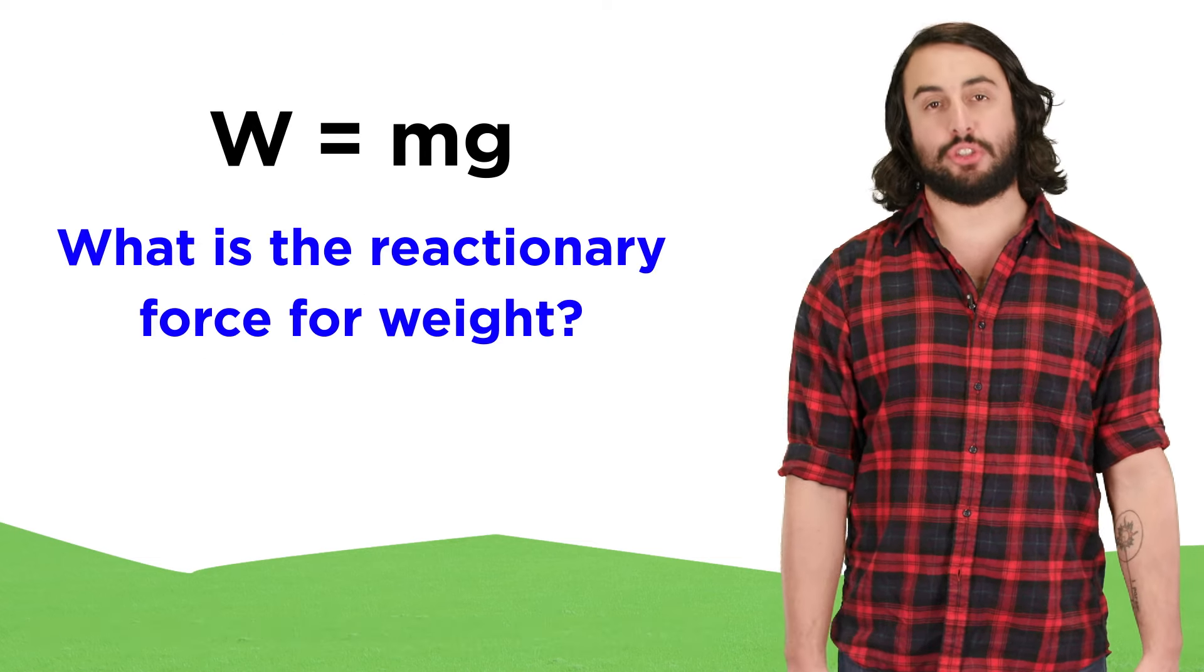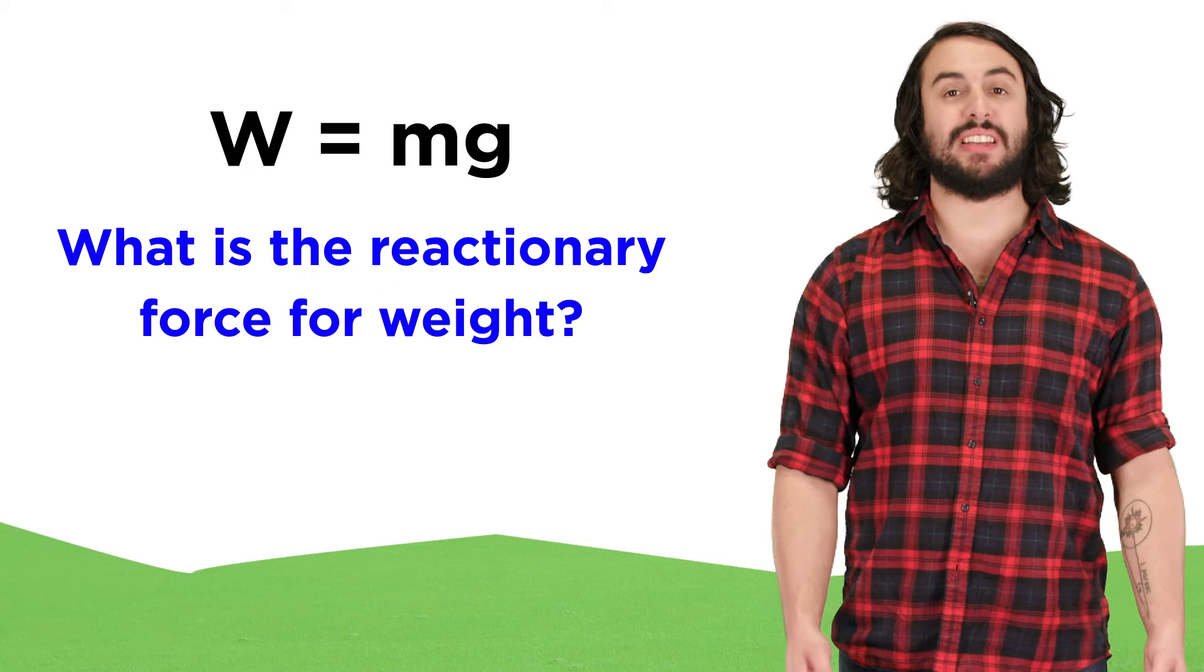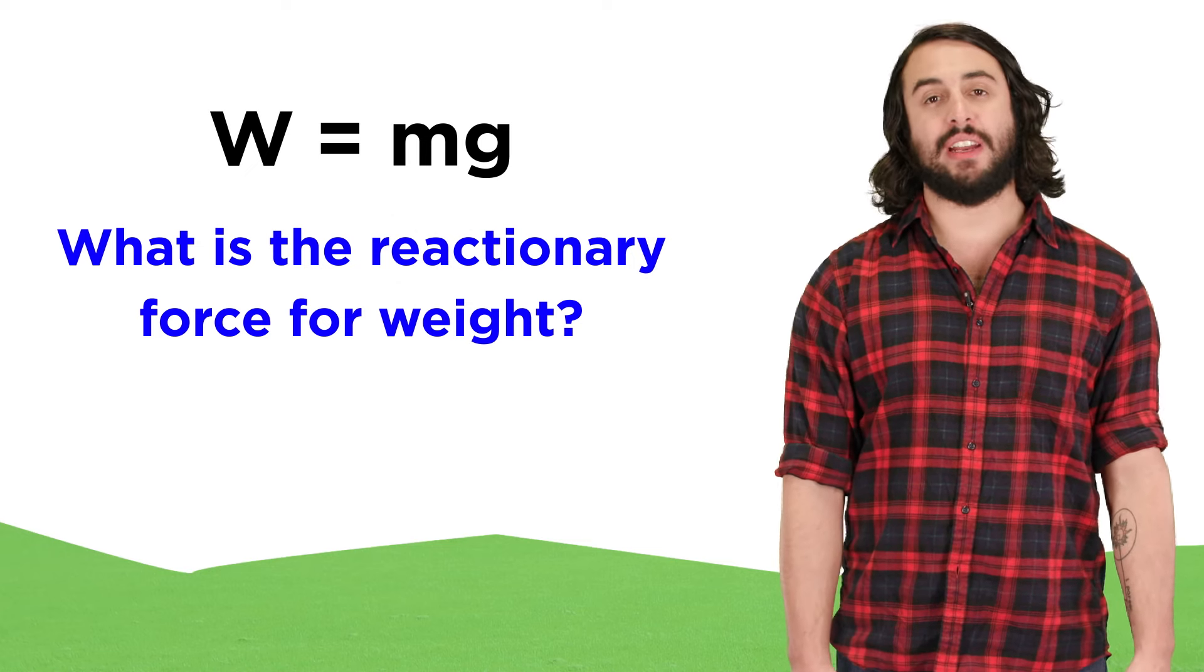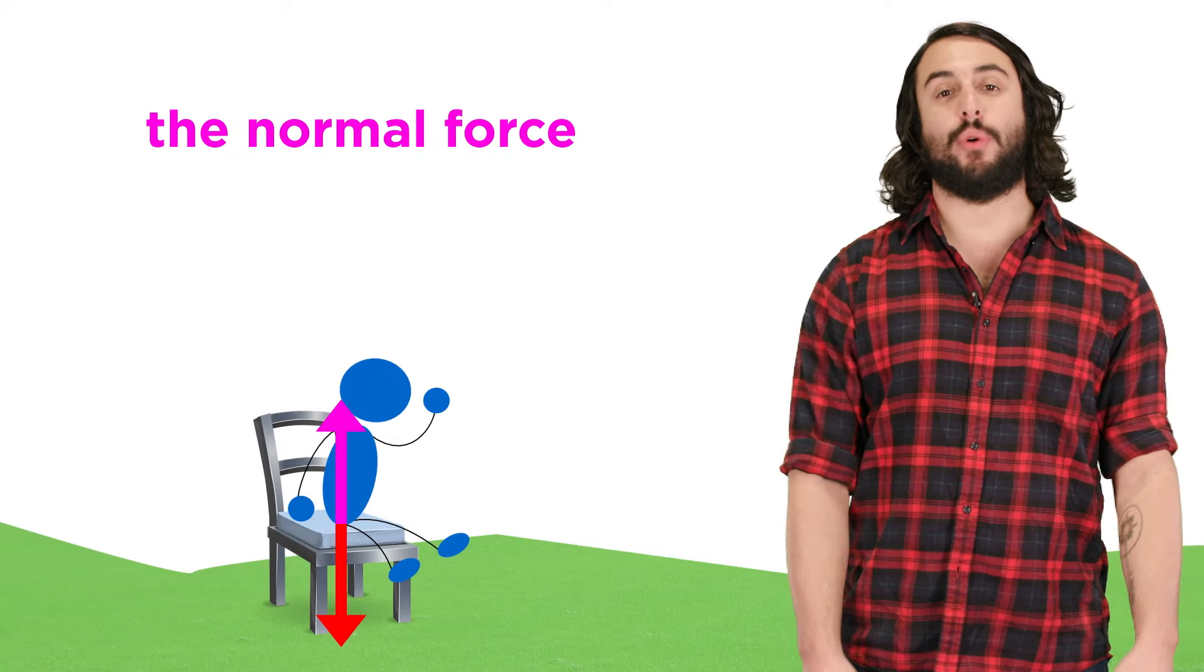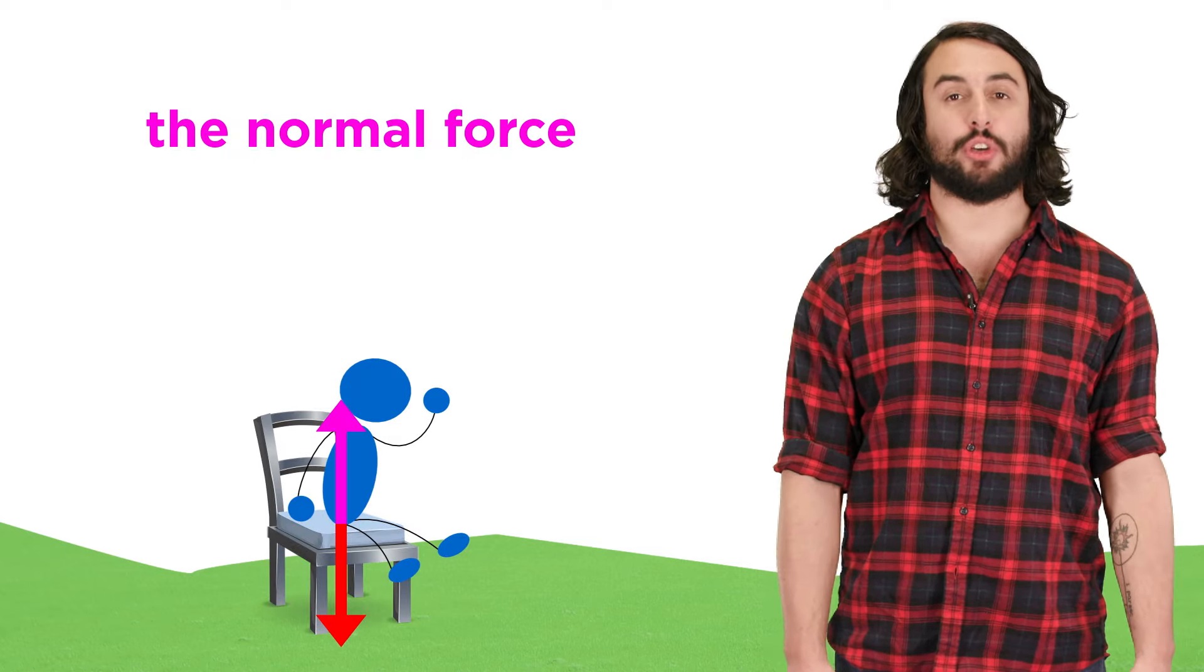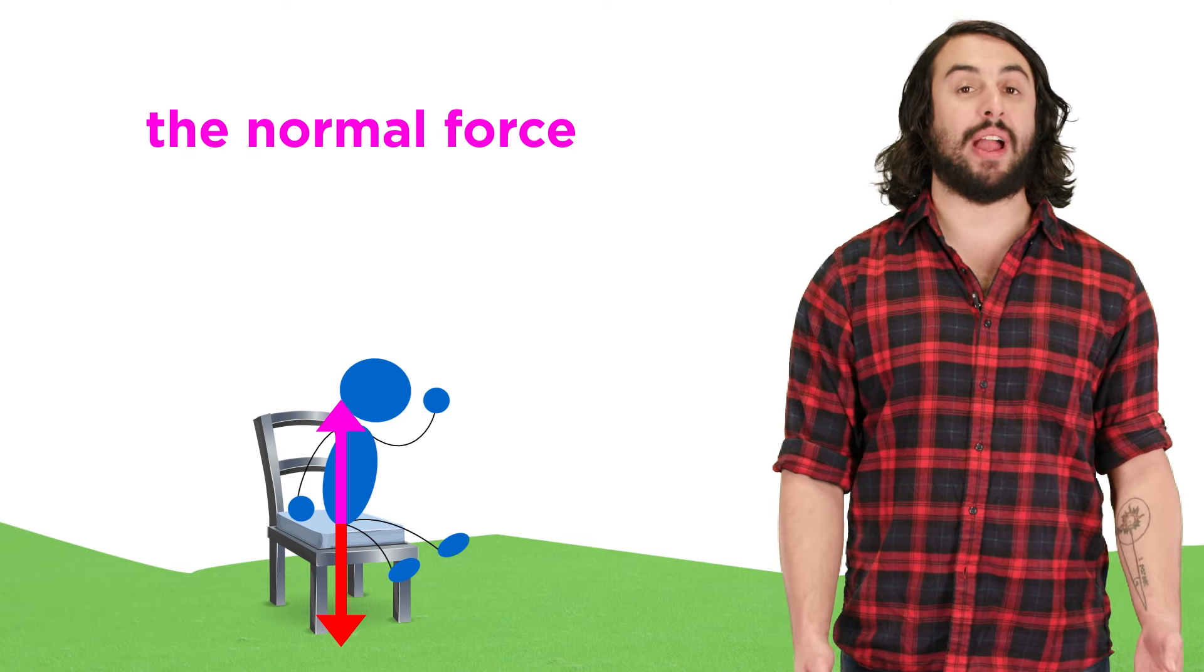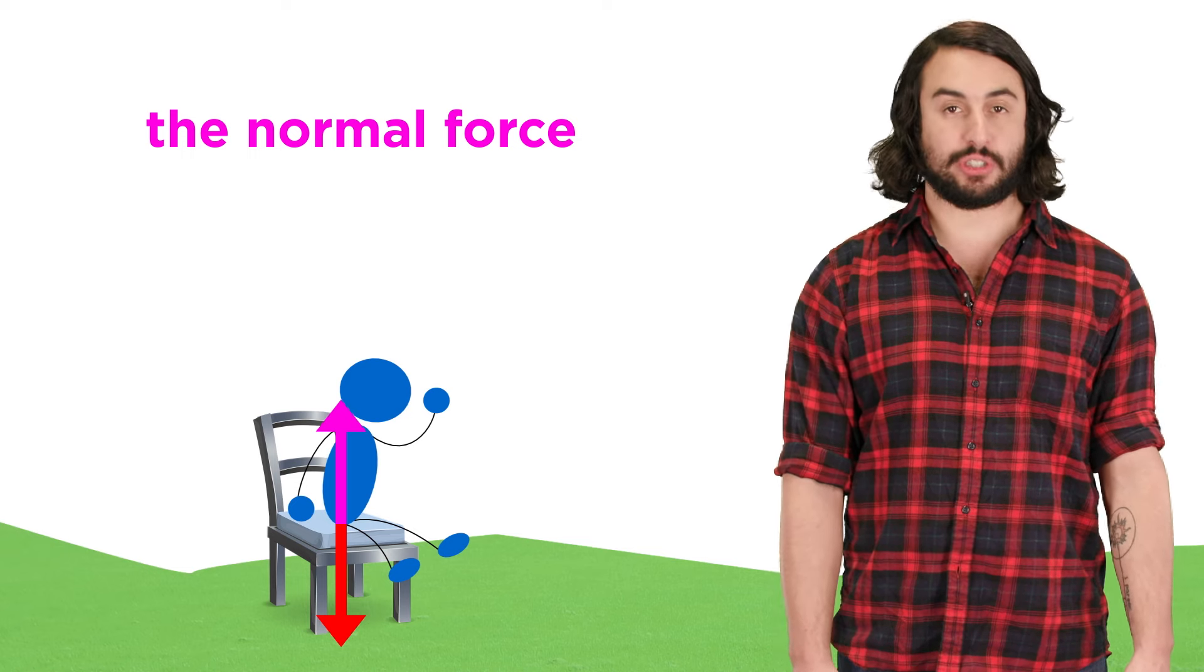We learned from Newton's third law that any force has an equal and opposite force, and so we will often encounter something called the normal force. The normal force is exerted by whatever surface the object sits on, and it points in the direction that is perpendicular to the surface.